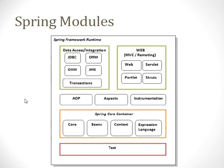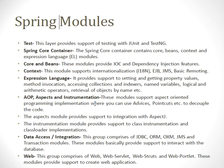The next layer includes AOP, Aspects, and Instrumentation. The AOP module supports aspect-oriented programming implementation. Aspects represent the view of how application program logic is executed — you can use advices or pointcuts to decouple the code. The Aspects module provides support for integration with AspectJ. The Instrumentation module provides support for class instrumentation and class loader implementation.